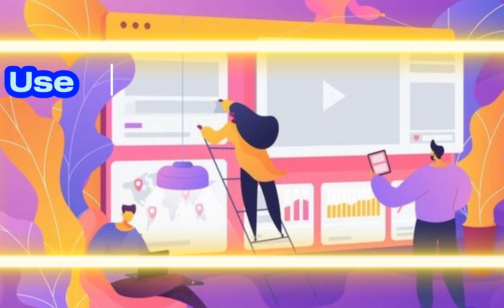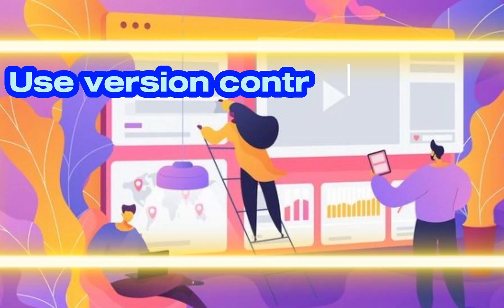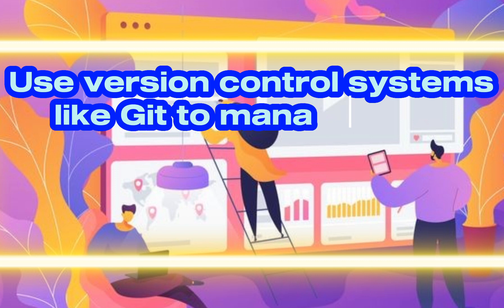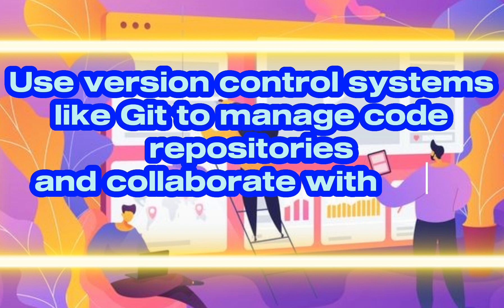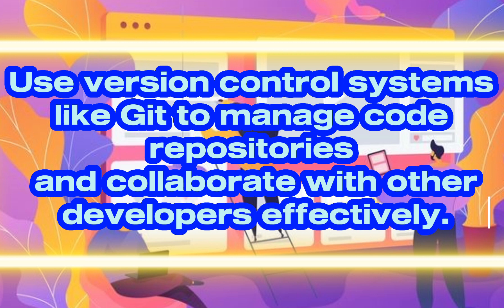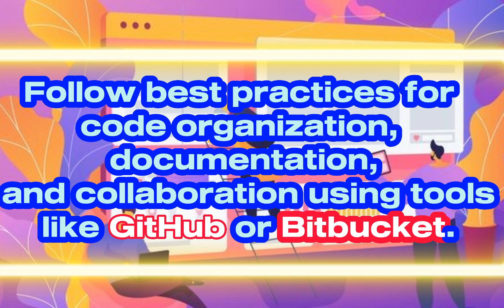Six: Version control. Use version control systems like Git to manage code repositories and collaborate with other developers effectively. Follow best practices for code organization, documentation, and collaboration using tools like GitHub or Bitbucket.